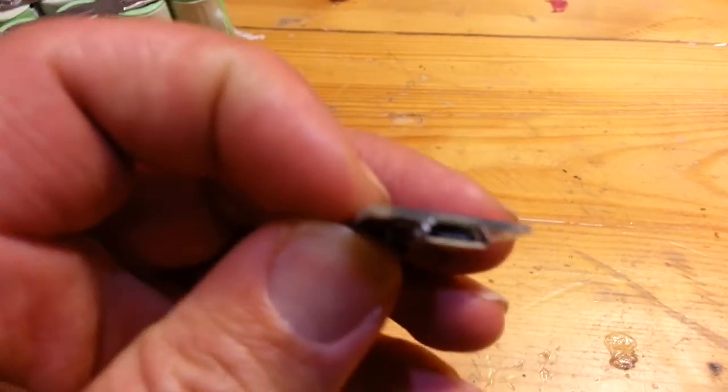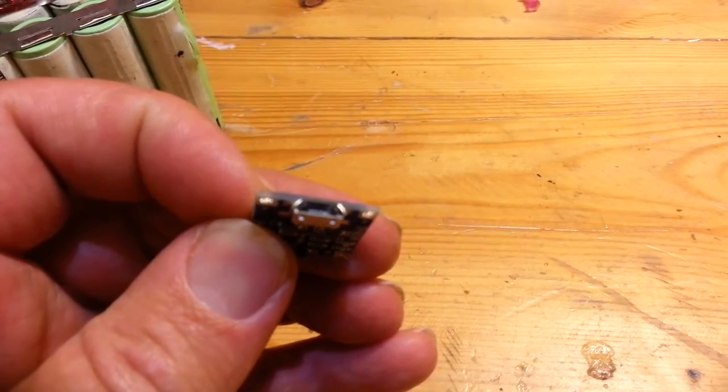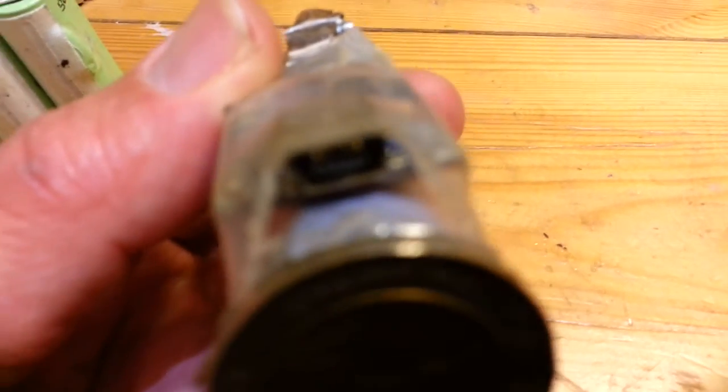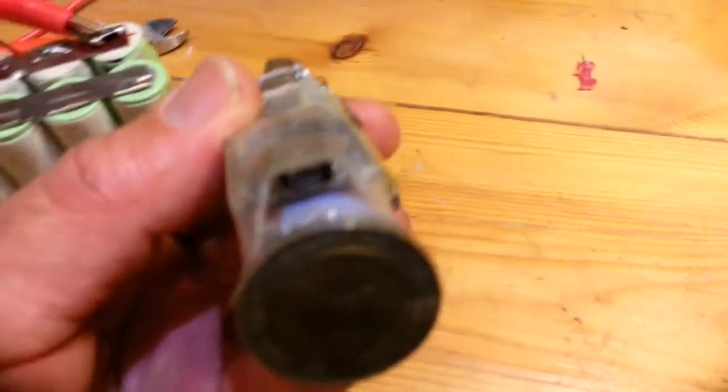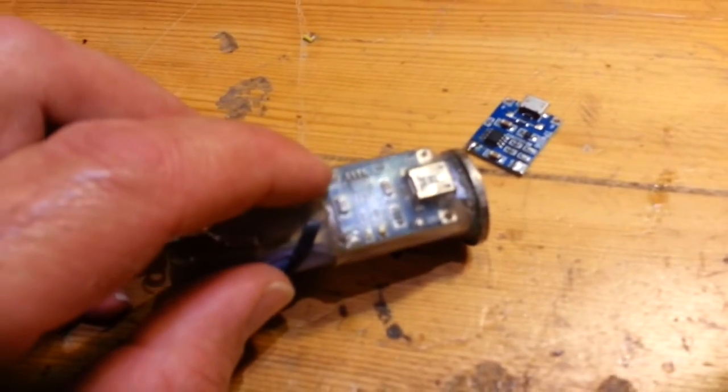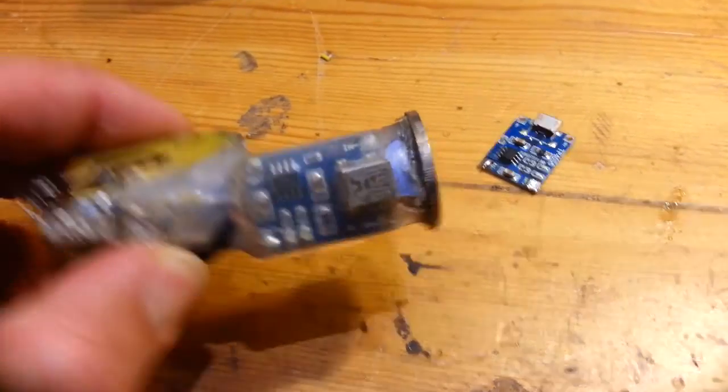One part of it is a 5 volt that you connect it to your micro USB cable. On your phone you have the micro USB or you have the mini USB. They both work the same. It's 5 volt converted to 4.2 volt, and it's charging the cell.